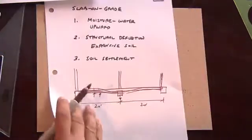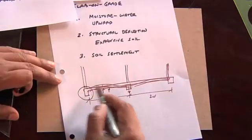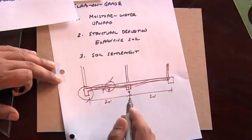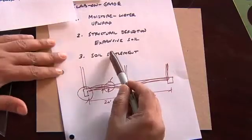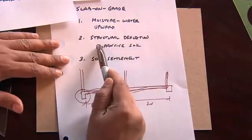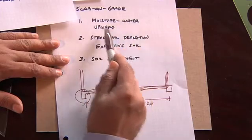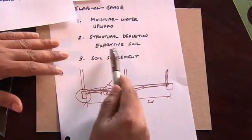But the scope of the repair then focuses only on the perimeter footing, as opposed to a slab-on-grade, where you not only have an issue with the perimeter footing, but you also have an issue with the interior slab. So, soil settlement, structural deflection due to expansive soil, moisture and water going upward, very, very common problems.